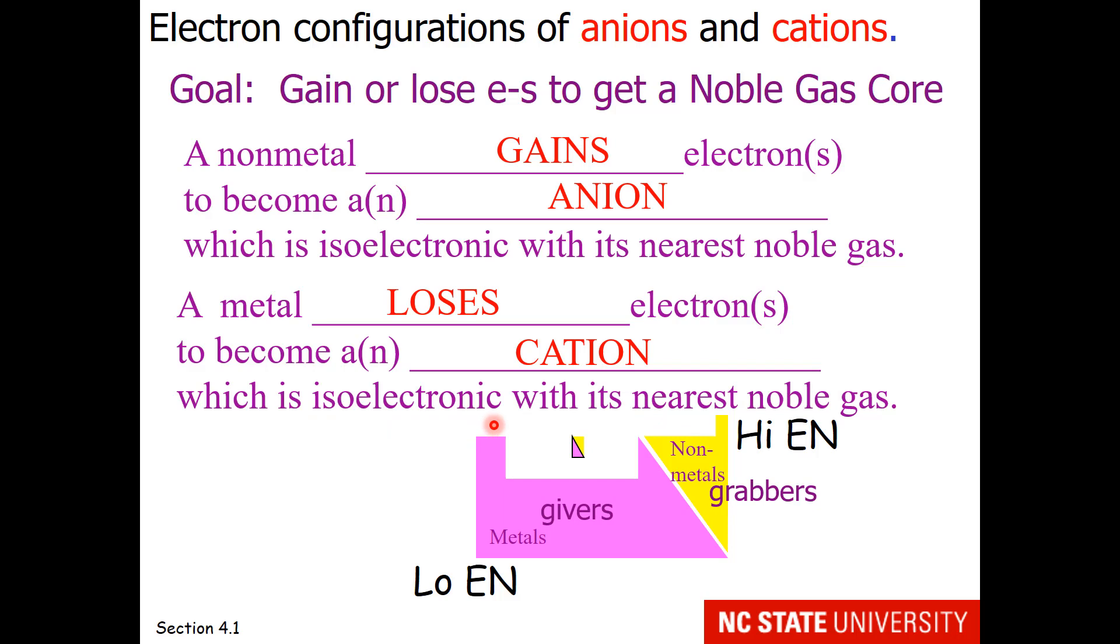Isoelectronic might be a new vocabulary word for you. It means having the same electron configuration.